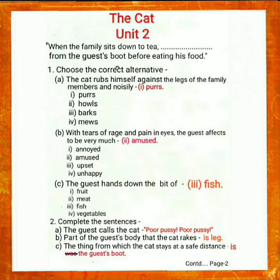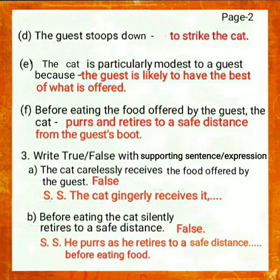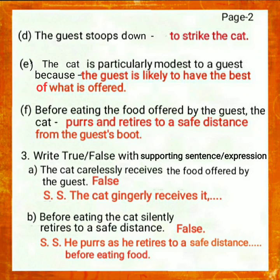C. The thing from which the cat stays at a safe distance dash. The complete sentence will be: the thing from which the cat stays at a safe distance is the guest's boot. D. The guest stoops down dash. The complete sentence will be: the guest stoops down to strike the cat. E. The cat is particularly modest to a guest because dash. The complete sentence will be: the cat is particularly modest to a guest because the guest is likely to have the best of what is offered. F. Before eating the food offered by the guest, the cat dash. The complete sentence will be: before eating the food offered by the guest, the cat purrs and retires to a safe distance from the guest's boot.